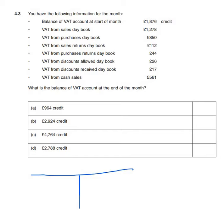The balance of the VAT account at the start of the month is given as a credit, so we put 1876 on the credit side — that's what we owe at the start of the month. VAT from the sales day book is money we collect and owe HMRC, because VAT is a tax on sales, so we add 1278 to the credit side. That adds to our liability to HMRC.